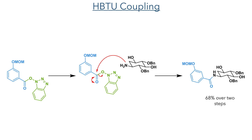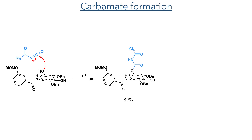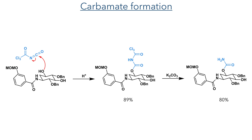With this in place, they could then install the carbamate. This was done using trichloroacetyl isocyanate, which is preferentially attacked by the less sterically hindered hydroxyl group. This could then be hydrolyzed using aqueous potassium carbonate to form the compound in an 80% yield.